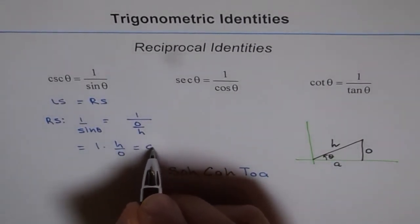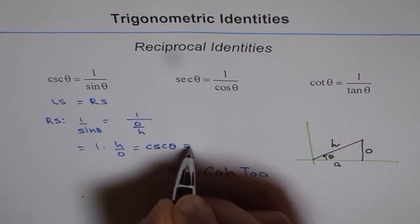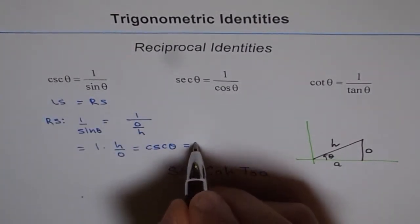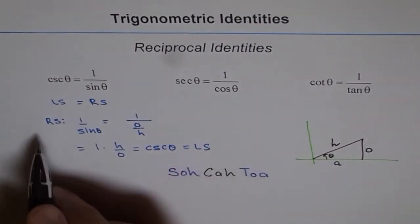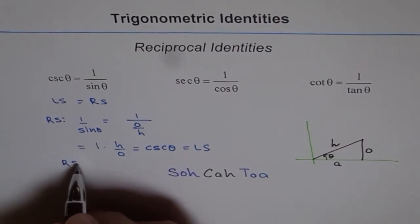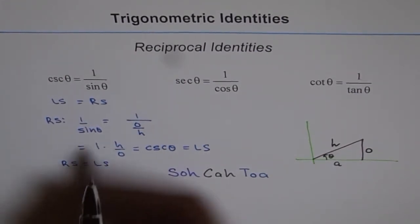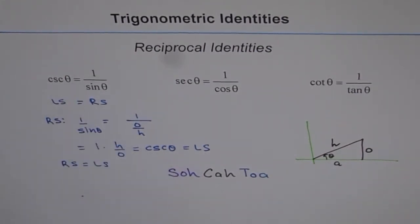H over O is cosecant theta, and that's what is on our left side. Since the right side equals the left side, we have proved this identity: the reciprocal of sine theta is cosecant theta, and the reciprocal of cosecant theta is sine theta.